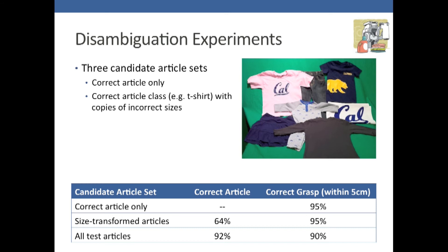With the size transform articles thrown in, it only picked out the right size 64% of the time. But we're dealing with things that aren't that different. What's interesting is that it still got the correct grasp points on those articles. Even if you don't have the perfect size, you'll likely still succeed in the reconfiguration phase because you still know what configuration it's in.